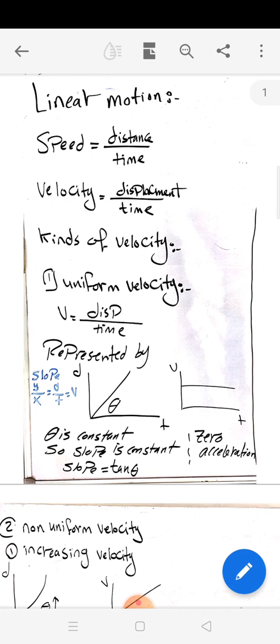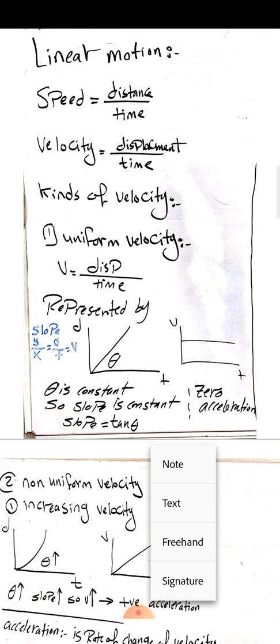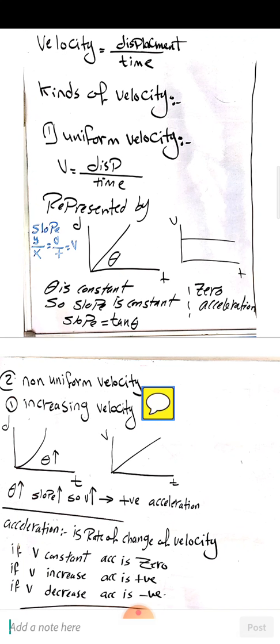For uniform velocity, the relationship is represented by displacement vs. time and velocity vs. time graphs. In the displacement-time graph, the angle inclined with the x-axis is constant — the slope equals tan(θ). Since slope is displacement over time, it equals velocity, so velocity is constant as θ is constant.